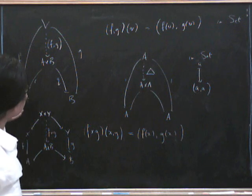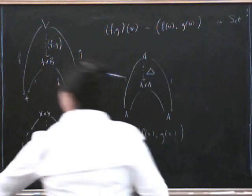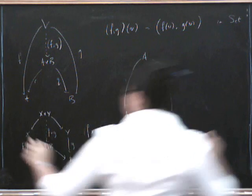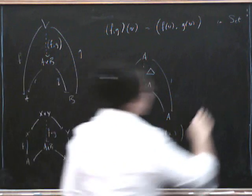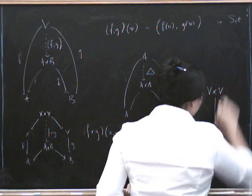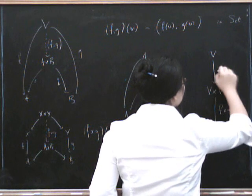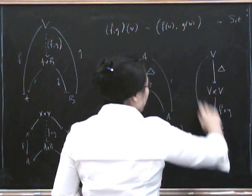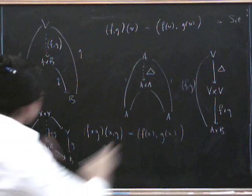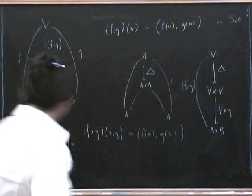You can relate this situation to this situation because what we could have done was this example using V over here and V over here as well. So what we get in that case is a map F cross G from V cross V to A cross B. And if we then compose it with a diagonal, we actually get F comma G, the F comma G that we originally thought of. So it can get a little bit confusing with the difference between these situations.